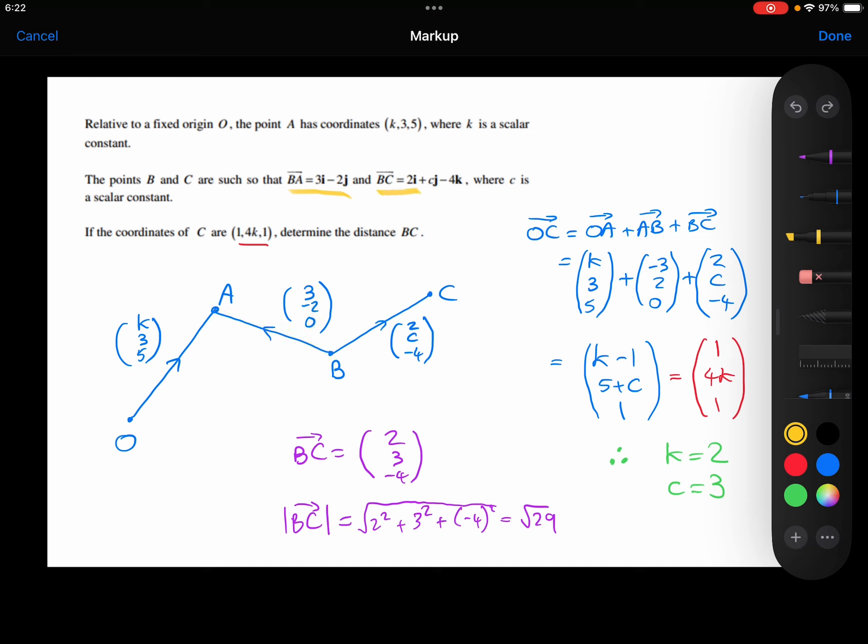We're then told that B to C, so again just drawing this on in a random position. I'm not marking on A, B, and C anywhere near accurately, just in random places. B to C is the vector (2, c, -4), where c is a scalar constant.